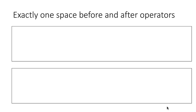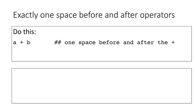The first convention is: please have exactly one space before and after operators. For example, with the plus operator, have exactly one space before the plus and one space after the plus. Don't put no spaces or two spaces — exactly one space before and after. This happens to be good practice to follow in any case, just for code readability.